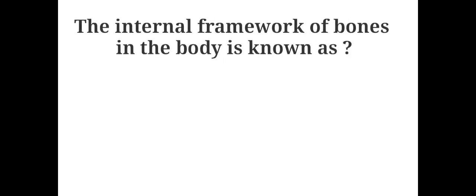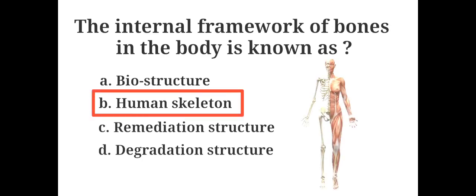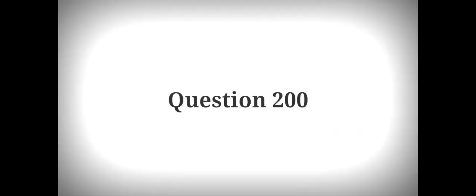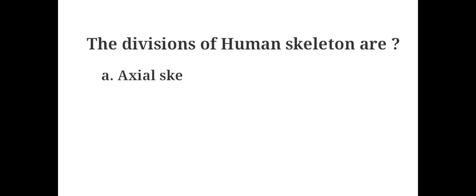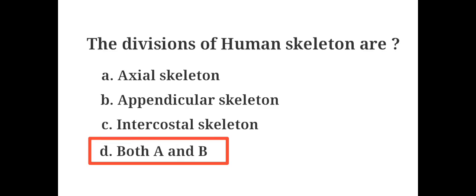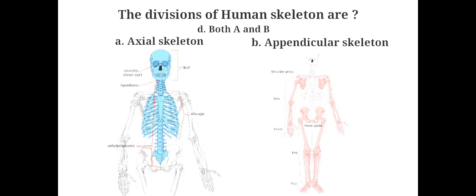The internal framework of bones in the body is known as: A. Biostructure, B. Human skeleton, C. Remediation structure, D. Degradation structure. The answer is B. Human skeleton. The divisions of the human skeleton are: A. Axial skeleton, B. Appendicular skeleton, C. Intercostal skeleton, D. Both A and B. The answer is D. Both A and B. The human skeleton has two major divisions: the axial skeleton and the appendicular skeleton.